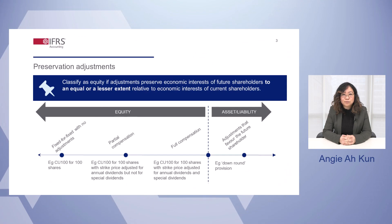The first type is preservation adjustments. They aim to preserve the economic interest of future shareholders relative to those of current shareholders. Under the ISP's proposals, a derivative is classified as equity if a preservation adjustment preserves the relative economic interest of a future shareholder to an equal or lesser extent compared to a current shareholder. As illustrated in the diagram, this is the case, for example, where the future shareholder has full or partial compensation for dividends paid to the current shareholder through an adjustment of the derivative strike price.